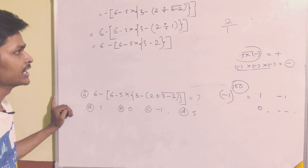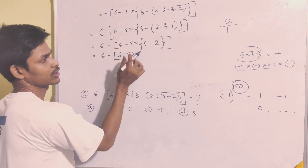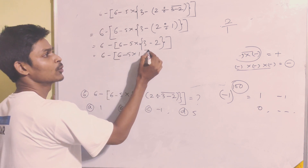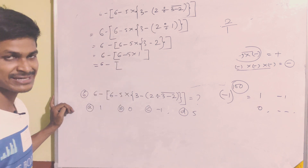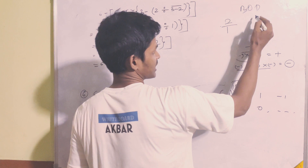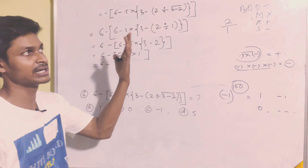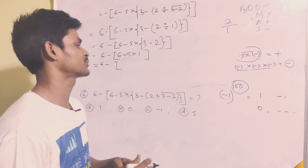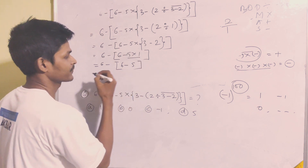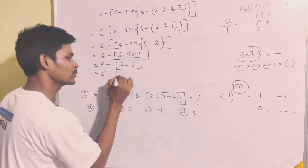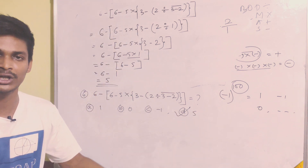2 divided by 1 equals 2, so 5 minus 2 equals 3. We apply the DMAS rule — division, multiplication, addition, subtraction. Then 5 into 1 gives 5, and 6 minus 5 equals 1. So 6 minus 1 equals 5. Option D is the answer.